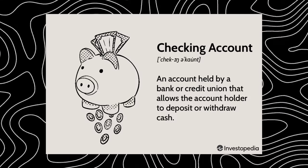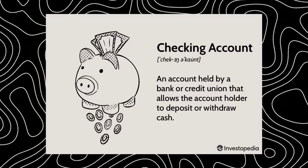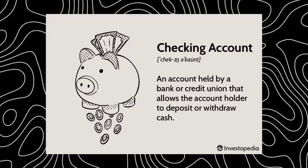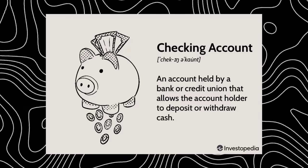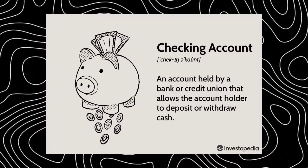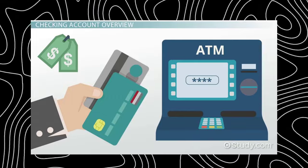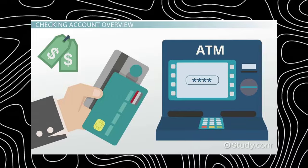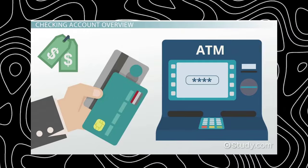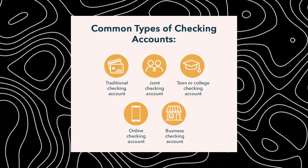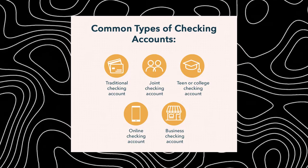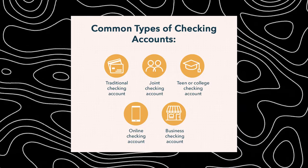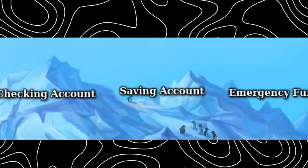FDIC insurance guarantees that if anything happens to your bank, the government will guarantee your money is safe up to $250,000. Checking account: if you dive deeper into bank accounts, the first one you'll find is a checking account. This is your everyday financial account — it gives you immediate access to your funds. Think of it as your ins and outs for daily transactions, from depositing your first paycheck to paying monthly bills to daily shopping via debit card.